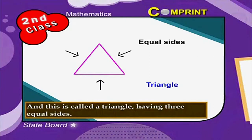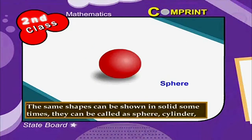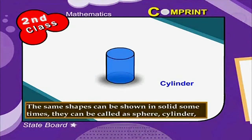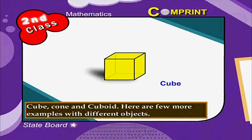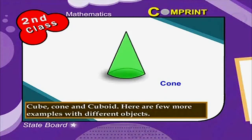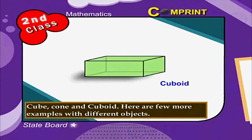The same shapes can be shown in solid form sometimes. They can be called a sphere, cylinder, cube, cone, and cuboid.